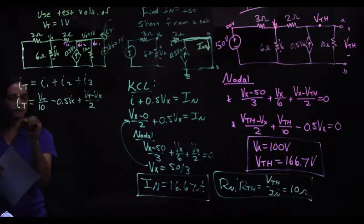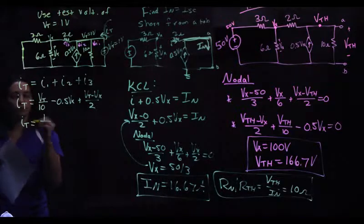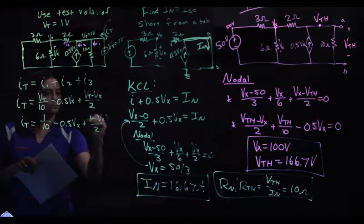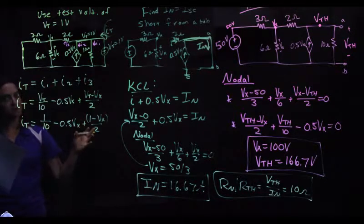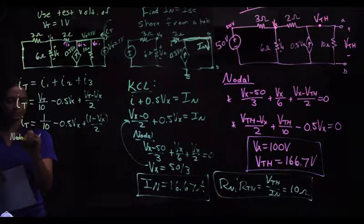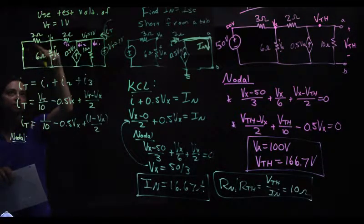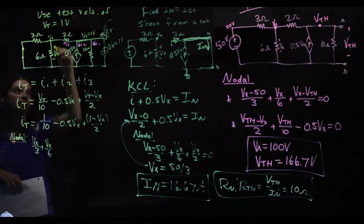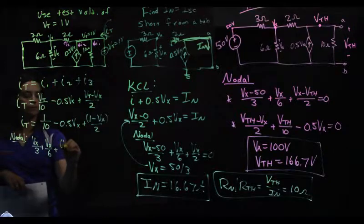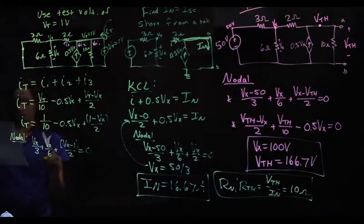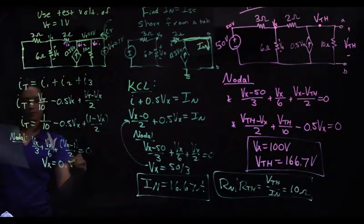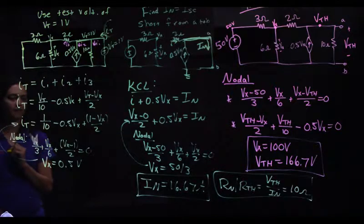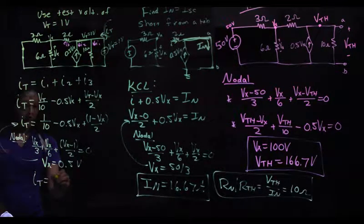Again, VT equals 1, so this leaves me with 1 unknown, well, 2 because of the IT, but 1 on this side. There's my equation. So I need my VX. What are we going to do? Nodal. VX minus 0 over 3, plus VX minus 0 over 6, plus VX minus VT, which is 1, over 2, equals 0. So solve that, get VX is 0.5 volts, so we need to use that up here. And when I do that, I get an IT of 1 tenth.